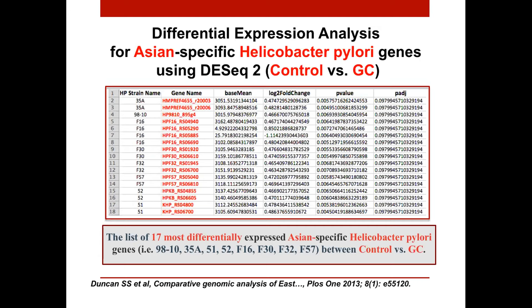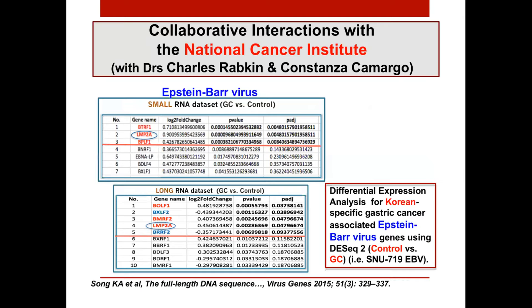Dr. Joel Rosowski's group performed the microbial analysis for us. What was surprising was that we could not detect any Helicobacter pylori genes in our cohort, even though H. pylori is one of the major risk factors for developing gastric cancer. Deeper analysis revealed that the most common microbial databases contain only European strains of this bacteria, not Asian-specific ones. When we did additional analysis we received very promising results. We also developed a collaboration with the NCI with Dr. Rapkin Charles and Dr. Constanza Camargo to develop Epstein-Barr virus exRNAs, and received very promising results there as well.